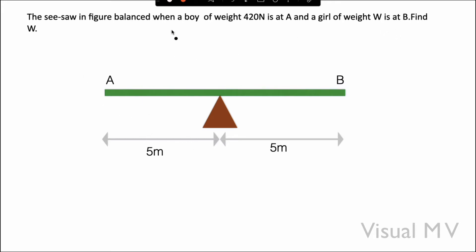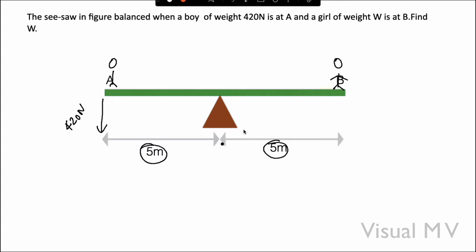Here, the boy's weight is 420 Newton at A, and there is a girl at B whose weight we need to find. You can see that both distances are equal, so there is no doubt the answer has to be 420 Newton. If the distances are equal, the weights must be equal for the seesaw to be balanced. So directly we can write it is 420 Newton.